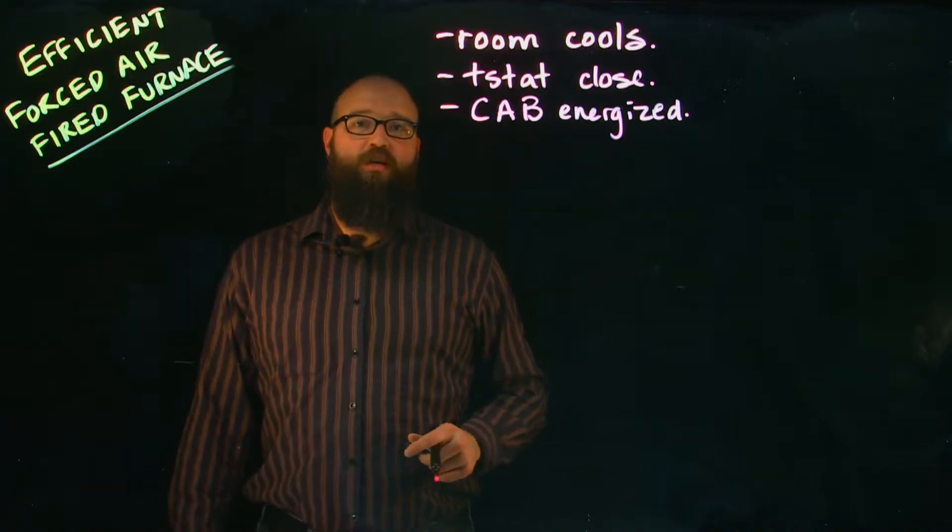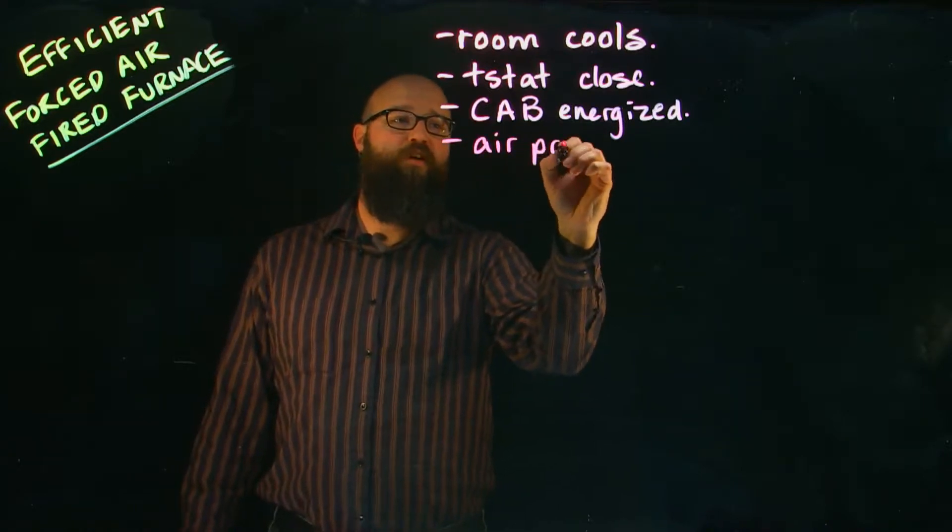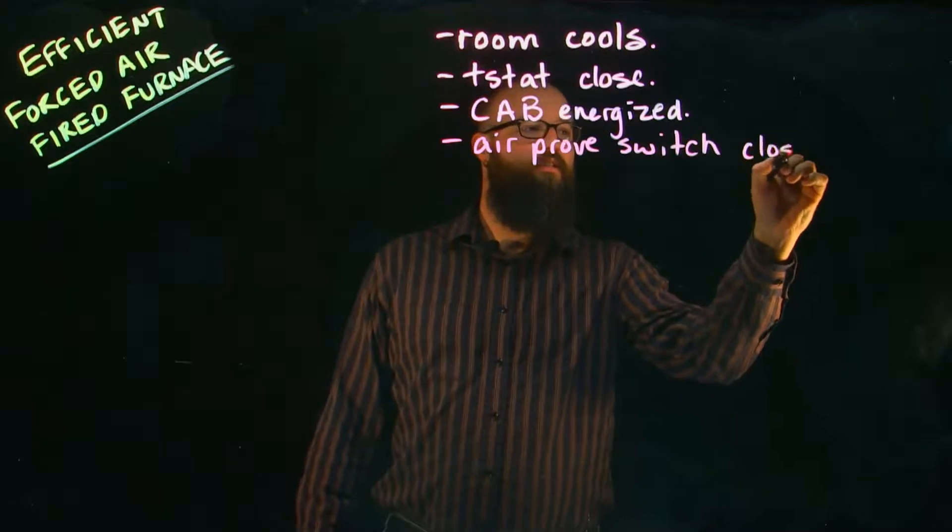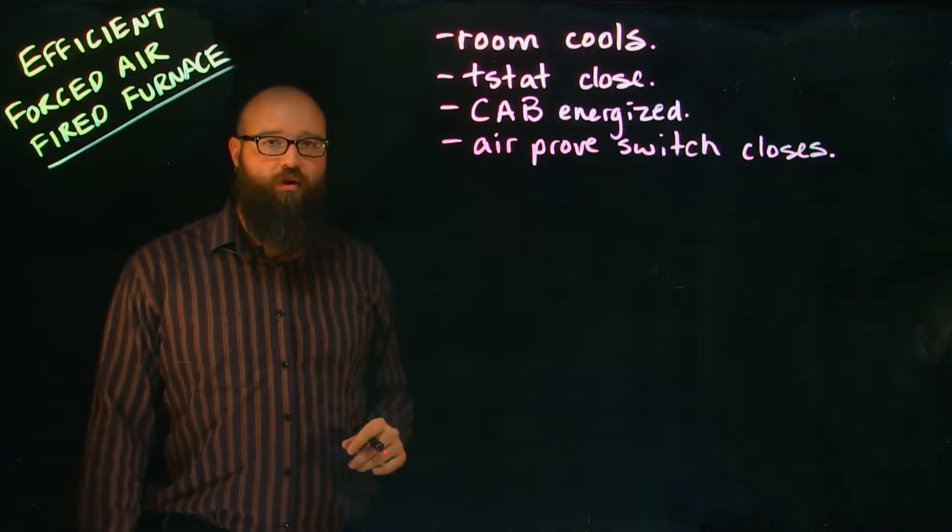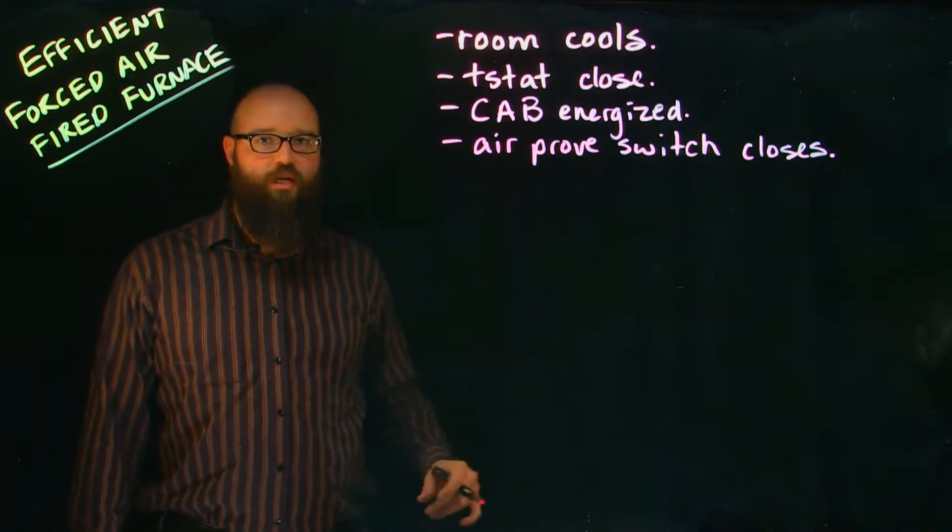Once our combustion air blower is energized, it creates a negative pressure and our air proof switch closes. That sends a signal back to our electronic control board, which then says it's safe to now start the ignition sequence.